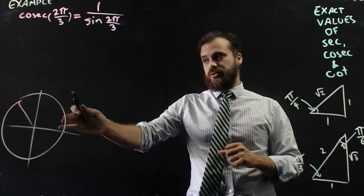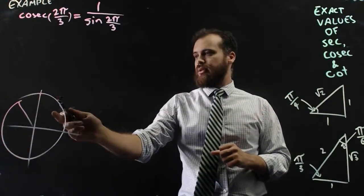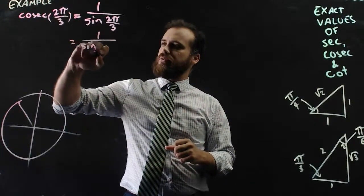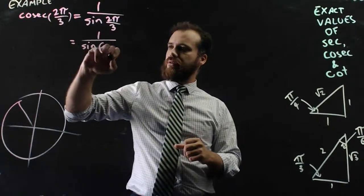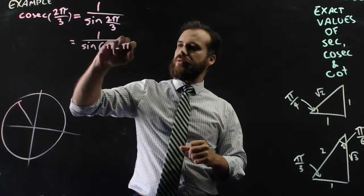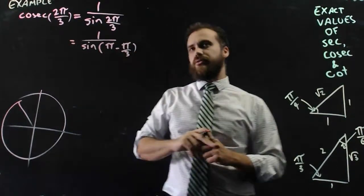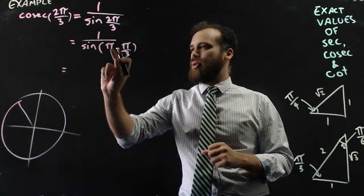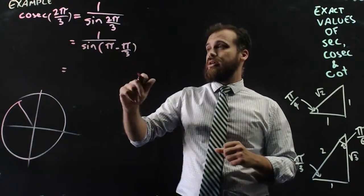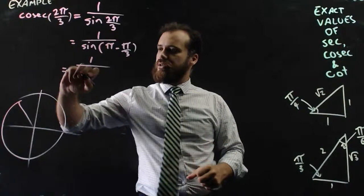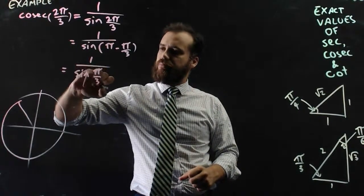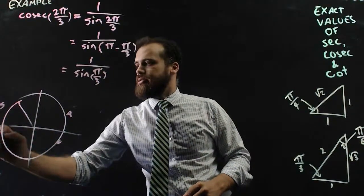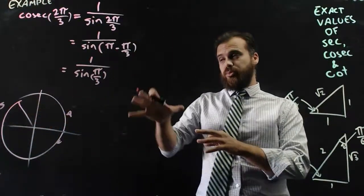If I want to put that back into quadrant 1, I've got to rewrite it as 1 over sine(π - π/3). Now sine(π - π/3) is the same as sine π/3. C, A, S, T. It's in the sine quadrant, so it is still positive.